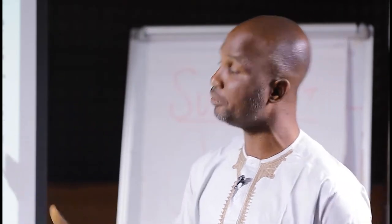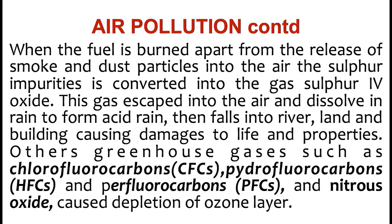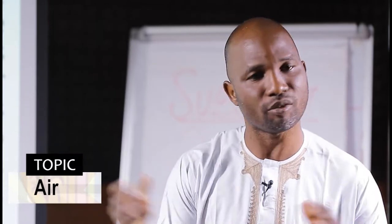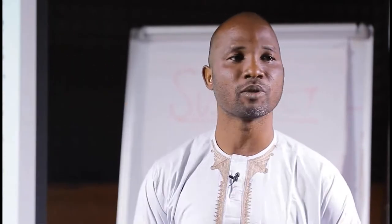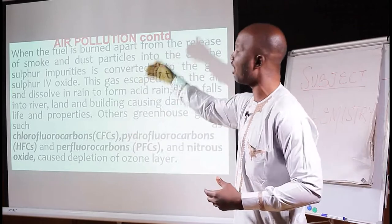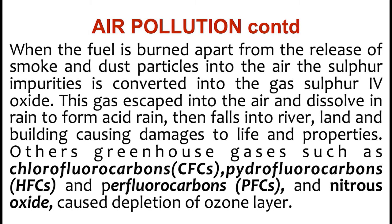This sulfur combines with oxygen to form sulfur dioxide. When the fuel is burned, apart from the release of smoke and dust particles into the air, the sulfur impurities are converted into the gas sulfur dioxide. This gas escapes into the air and dissolves in rain to form acid rain. Acid rain is a phenomenon that occurs when acid anhydrides — oxides of non-metals like sulfur and nitrogen — dissolve in rainfall and fall down as acid. This acid rain falls into rivers, land and buildings, causing damage to life and property.